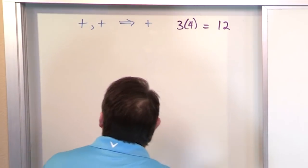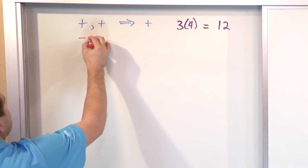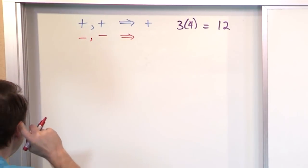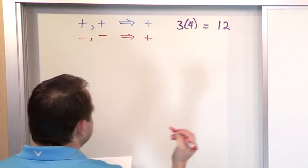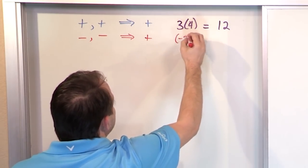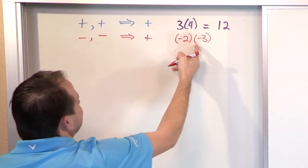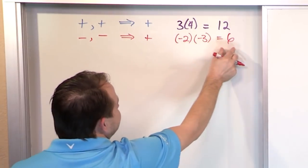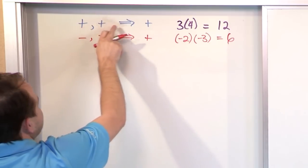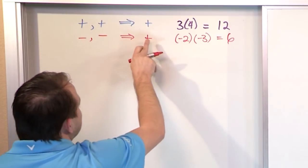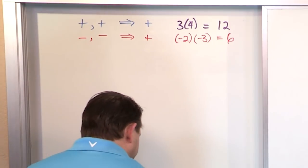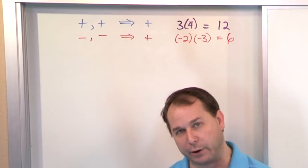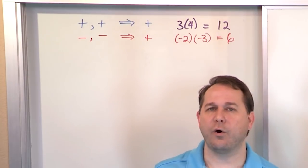Whenever you're doing a multiplication of a negative number times a negative number, you always get a positive answer again. The simple example here would be negative 2 times negative 3. Since it's negative times negative, you always get a positive result. So 2 times 3 is 6, and the final answer is positive 6. Positive times positive gives you positive, and negative times negative also gives you positive.